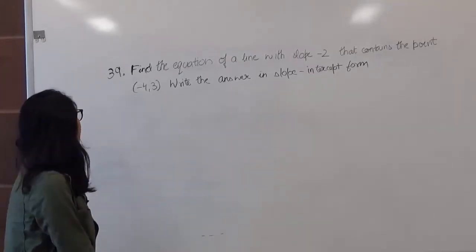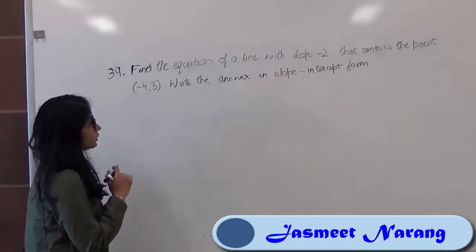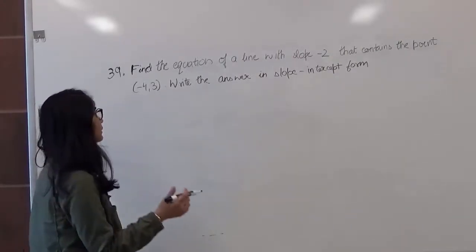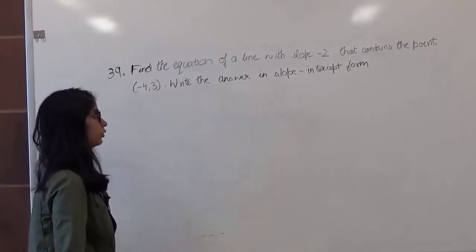Hi, welcome to Help Your Math, question 39. Find the equation of a line with slope -2 that contains the point (-4, 3) and write the answer in slope-intercept form.